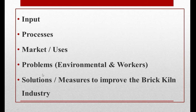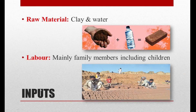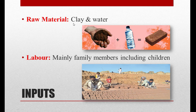In this video you will witness the inputs, processes, uses, environmental and worker problems, and solutions to improve the brick kiln industries in Pakistan. Inputs include raw material, labor, capital, and power. Raw material is the basic commodity required to manufacture a product. To make bricks, the basic items are clay and water. Plenty of clay is available in Punjab and Sindh, which is why there are many kilns in these two provinces. Labor mainly consists of family members, including children, who usually do work in most of the kilns in Pakistan.